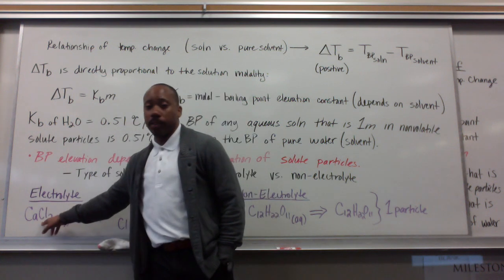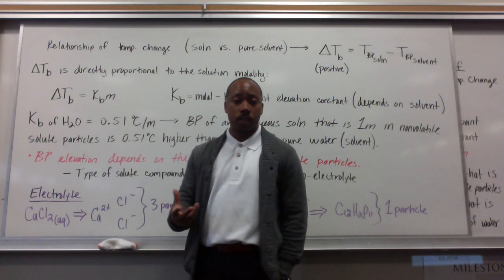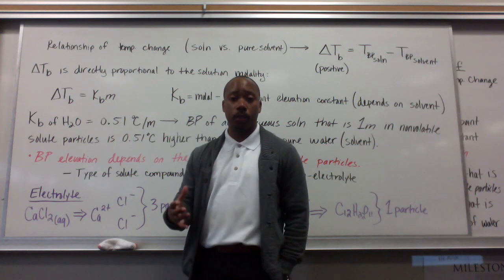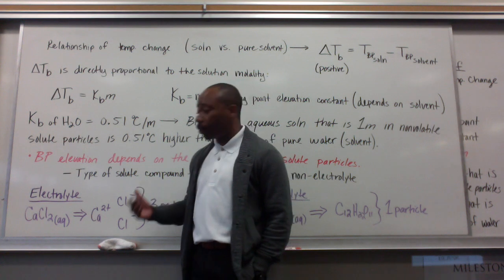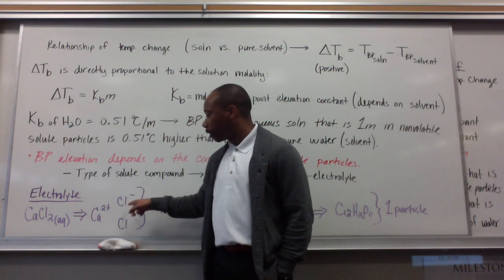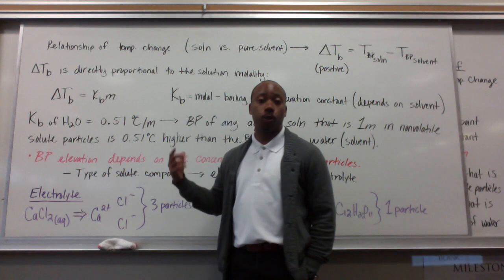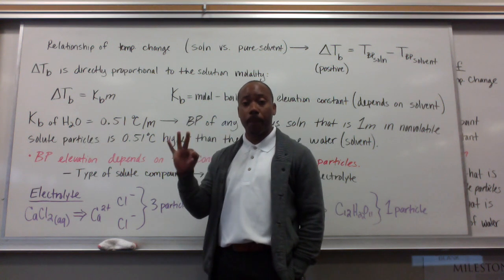Ionic compounds like calcium chloride here dissolve in aqueous, or dissolve in a solvent to form an aqueous solution, which acts as an electrolyte. When it does, it dissociates into three ions. Calcium 2+, and two chloride ions. So, I have three particles here.